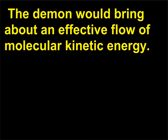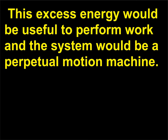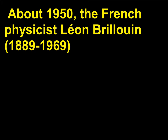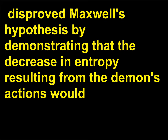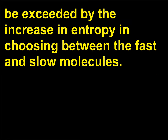The demon would bring about an effective flow of molecular kinetic energy. This excess energy would be useful to perform work and the system would be a perpetual motion machine. About 1950, the French physicist Léon Brillouin (1889–1969) disproved Maxwell's hypothesis by demonstrating that the decrease in entropy resulting from the demon's actions would be exceeded by the increase in entropy in choosing between the fast and slow molecules.